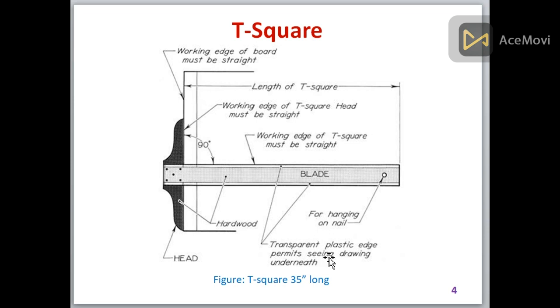This is the total length of the T-square from here to here. This is the working edge and this slides on the table. This is basically the drawing table. This can be slid up and down with the help of this.